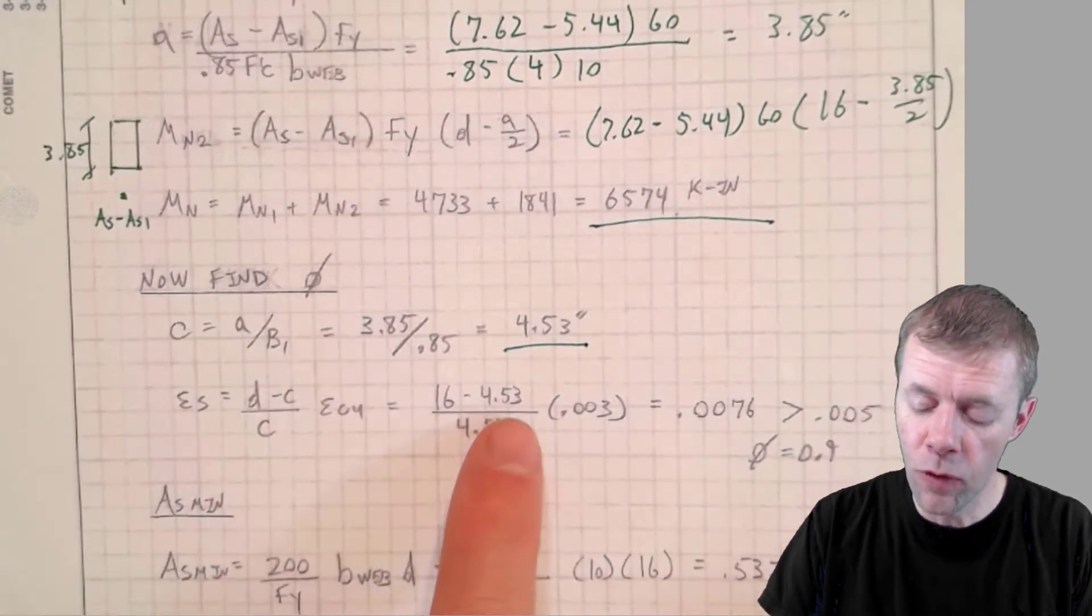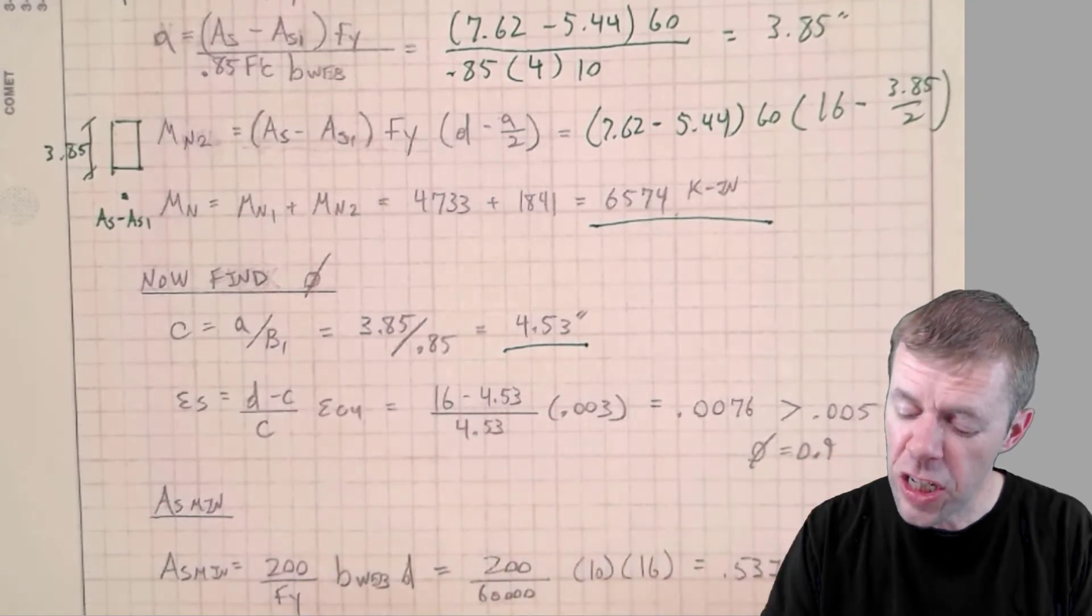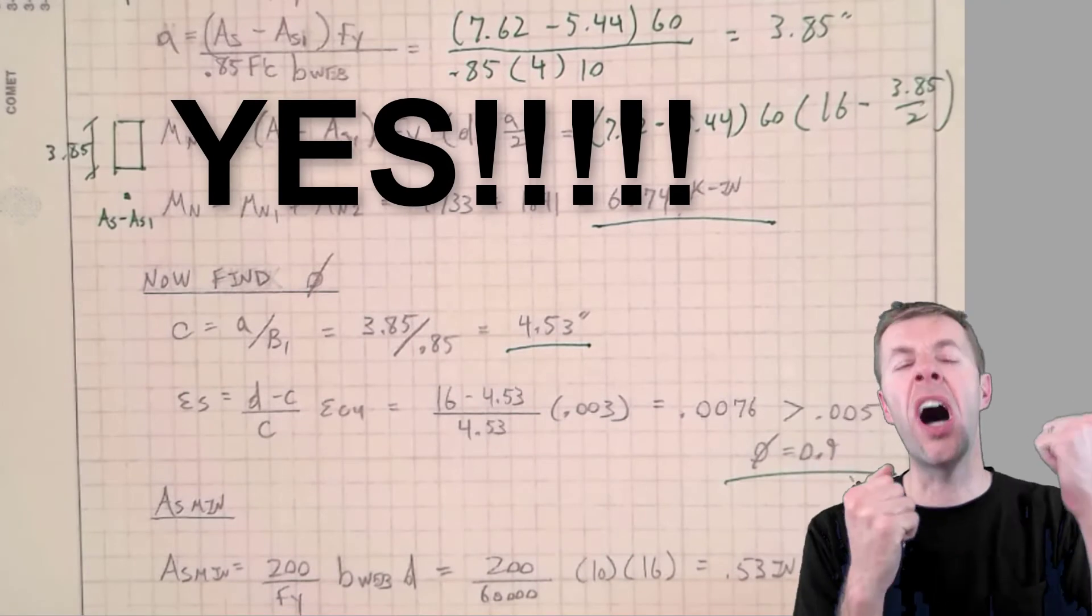I plug into my favorite equation where I solve for my strain of steel. D minus C over C times 0.003. I get 0.0076, which is greater than 0.005. So yes, phi is 0.9. Awesome.